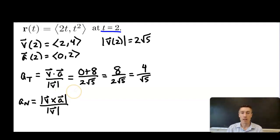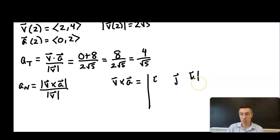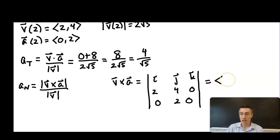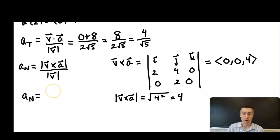Cross product is only defined in 3-space, and both vectors are currently in 2D, so we add a k component of 0: ⟨2, 4, 0⟩ × ⟨0, 2, 0⟩. The i component is 0 - 0 = 0, j component is 0 - 0 = 0, k component is 4 - 0 = 4. The magnitude of the cross product vector is √(0 + 0 + 16) = 4. So the normal component is 4 over 2√5, which is 2 over √5.